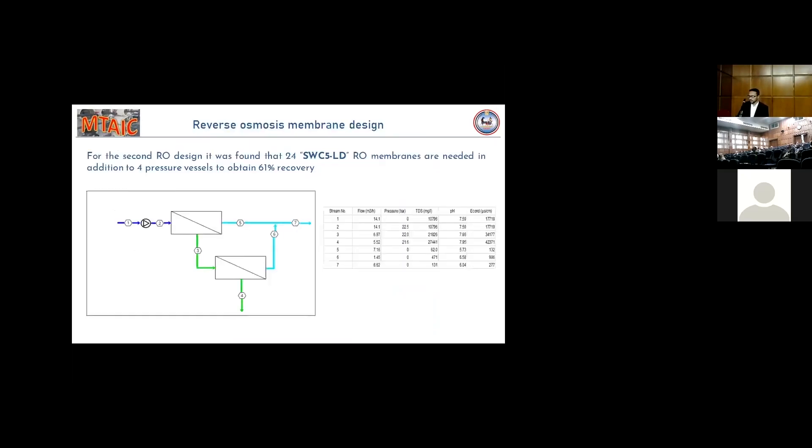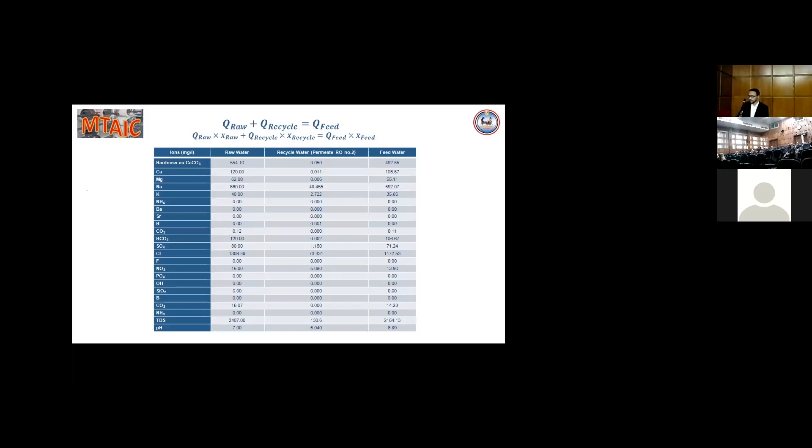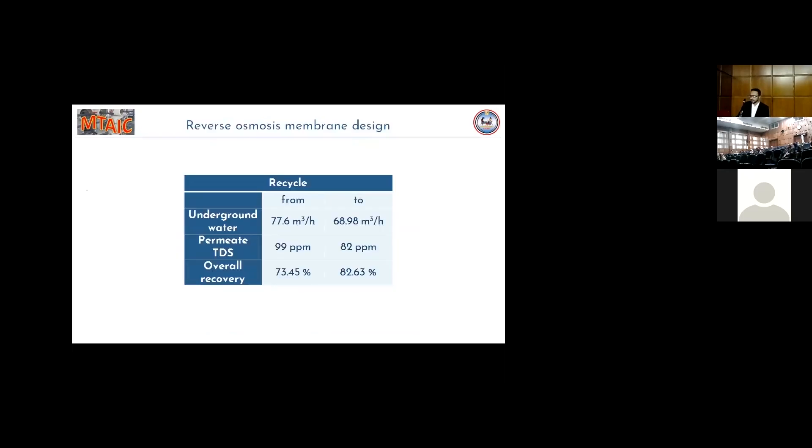The second RO is found that it needs 42 membrane elements of CW35 LED to obtain the maximum recovery of 61%. The permeate from the second RO, which will be recycled in the mixer with the raw water and the mass balance is applied to get the mixed stream. The recycle is done to decrease the underground water needed, decrease the feed TDS and increase the overall recovery.